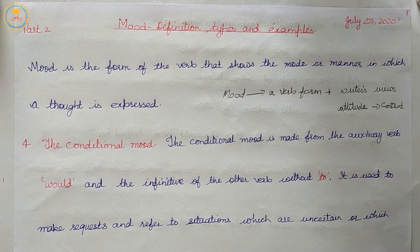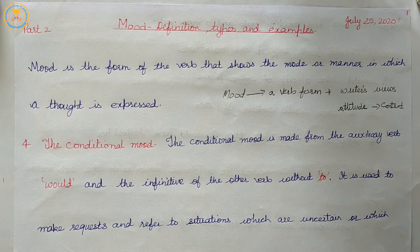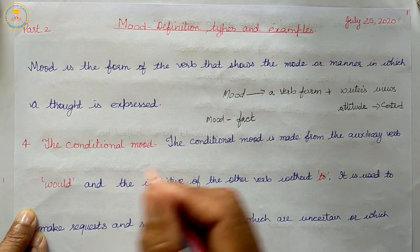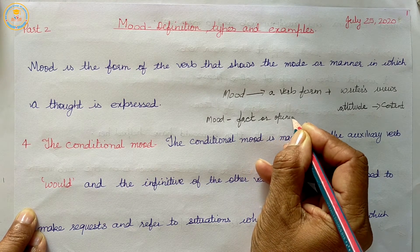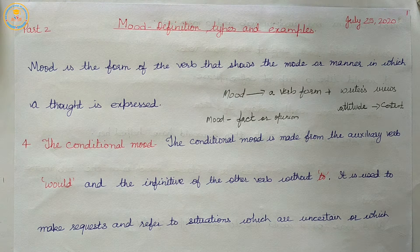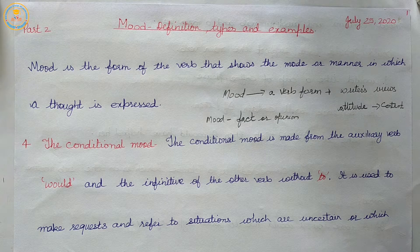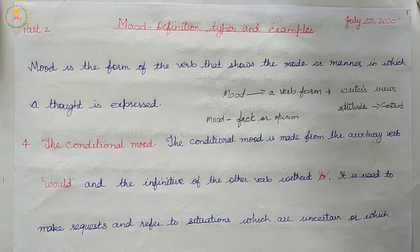Mood indicates whether something is a fact or opinion. Mood shows whether something is a fact, opinion, command, suggestion, request, wish, an imaginary situation, or uncertainty. The five basic types of moods are: indicative, imperative, interrogative, conditional, and subjunctive.